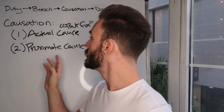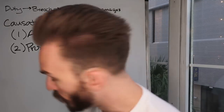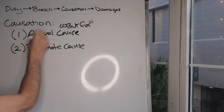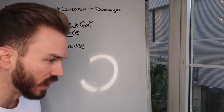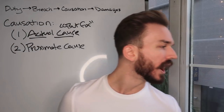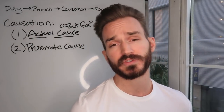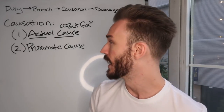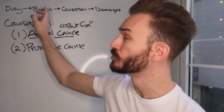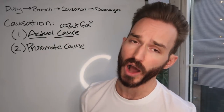Causation has two parts. Let's start with actual cause. Actual cause comes down to one question: would the plaintiff's injury have occurred but for the defendant's breach of the standard of care owed? If you can say this injury would have never occurred but for the defendant's breach, then you satisfy actual cause.